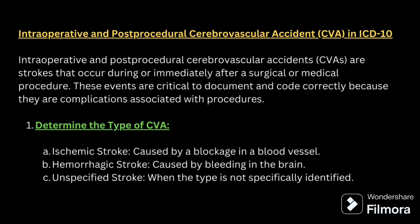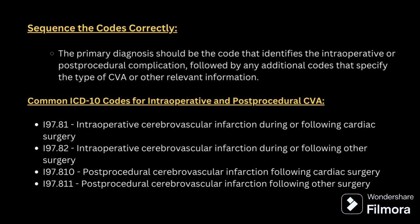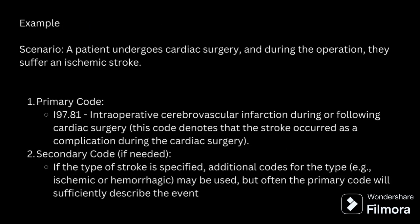Intraoperative and post-procedural cerebrovascular accident refers to strokes that occur during or immediately after a surgical or medical procedure. These must be documented and coded correctly as complications associated with the procedure. First, determine the type of CVA — ischemic or hemorrhagic stroke. The primary diagnosis should be the code identifying the intraoperative or post-procedural complication, followed by an additional code for the type of CVA. Common codes include I97.810, I97.811, I97.8181, and I97.8182. Example: a patient undergoing cardiac surgery suffers an ischemic stroke — first code I97.8181, second code for the type of stroke.